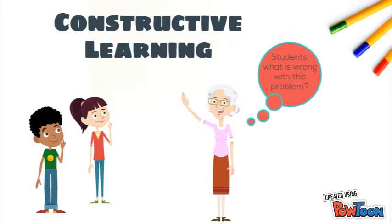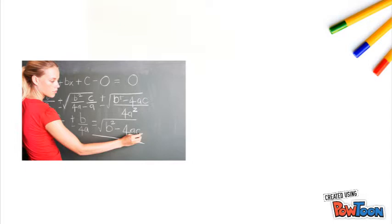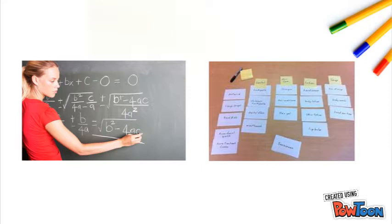Number three, constructive learning. Constructive learning is when students are using their higher level thinking skills to find a solution to a specific situation. Posing incorrect math problems for students to study and solve correctly or even assigning blind sorts where students can find the common characteristics are ways to implement constructive learning in the classroom.